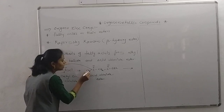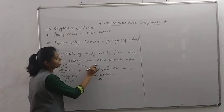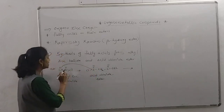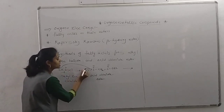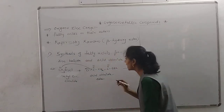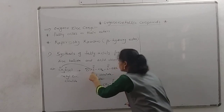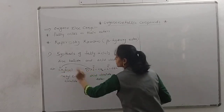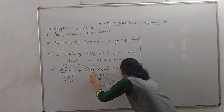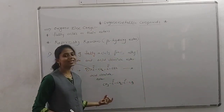The CH3 attacks the carbonyl carbon; this oxygen is electronegative. In the next step, the negative charge shifts and chlorine is removed. So directly: CH3 substitutes in place of chlorine and chlorine is removed. The product is CH3–C(=O)–CH2–C(=O)–CH3, which is ethyl acetoacetate. In this way you can synthesize ethyl acetoacetate in the laboratory. Another byproduct is zinc chloride (ZnCl2).